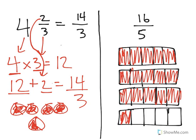As you can see, I have different shapes, or the same shape, broken up into 5 pieces for our denominator of 5, and I have 16 total pieces shaded in. As I continue to count on, you'll see that there are 16 pieces shaded in.